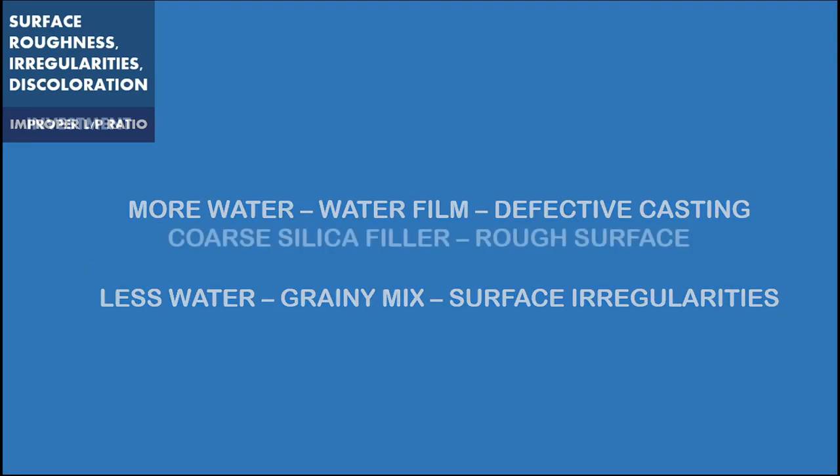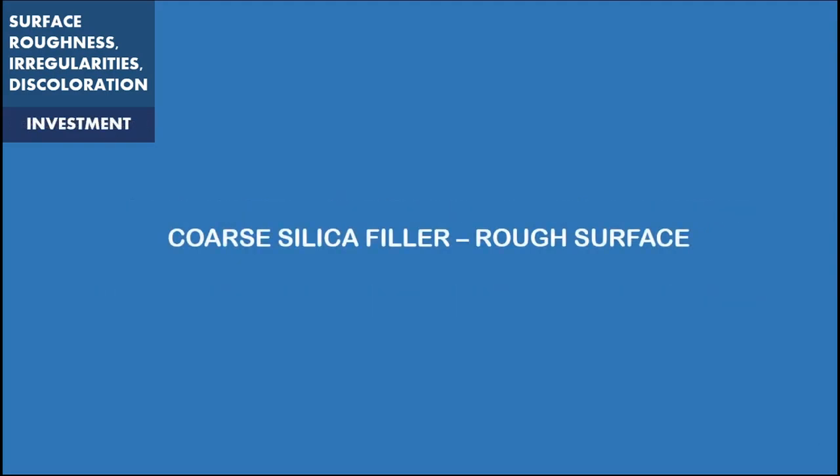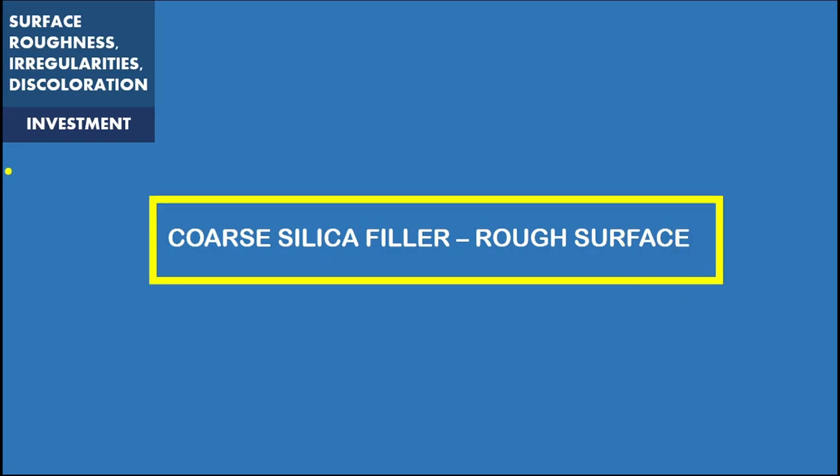The type and composition of the investment used also determines the surface texture of the casting. The ratio of the binder mass to that of the quartz, i.e. the filler, influences the surface texture of the casting. In addition, a coarse silica filler will lead to surface roughness.